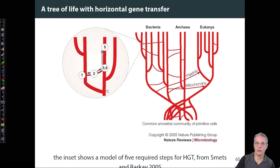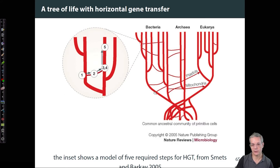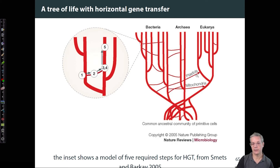So a real consequence is that the true tree of life has these different branches that cross it. We see some things like the big ones, like the mitochondria here and the origin of plastids here.